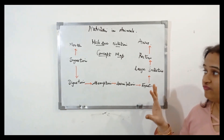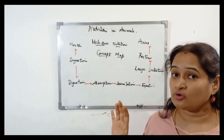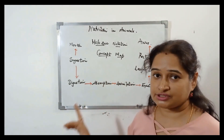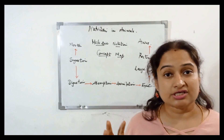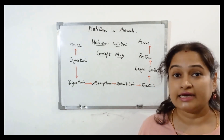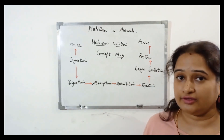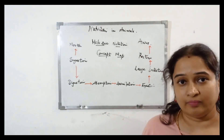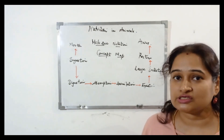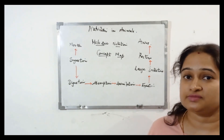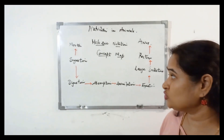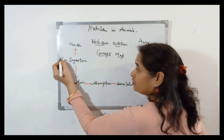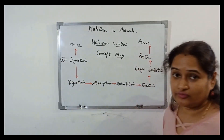The first step which takes place in holozoic nutrition is ingestion. Ingestion means taking food inside your body. In the case of human beings, the process of ingestion takes place by mouth. So this is the first step of holozoic nutrition.